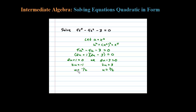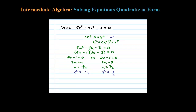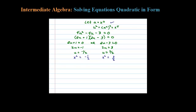At this point we back-substitute. Remember u was equal to x squared, so substituting back in: x squared equals negative 1 half, and also x squared equals 3 halves. To solve for x, we extract the root — take the square root of both sides — and don't forget the plus or minus when you do that.